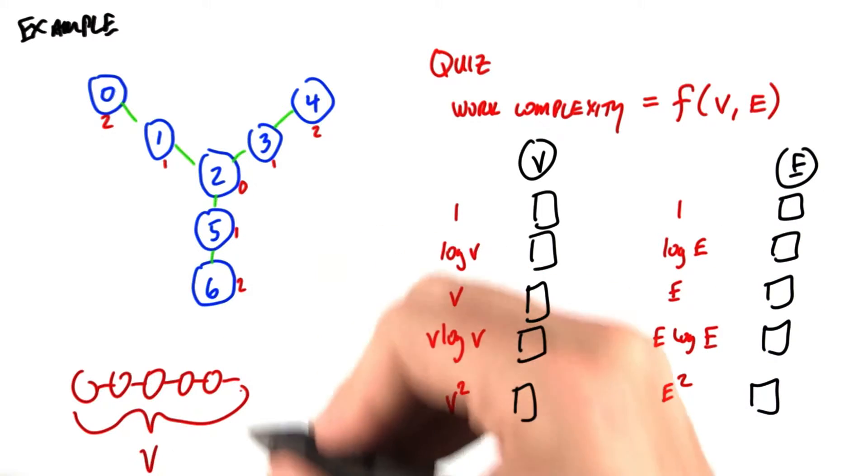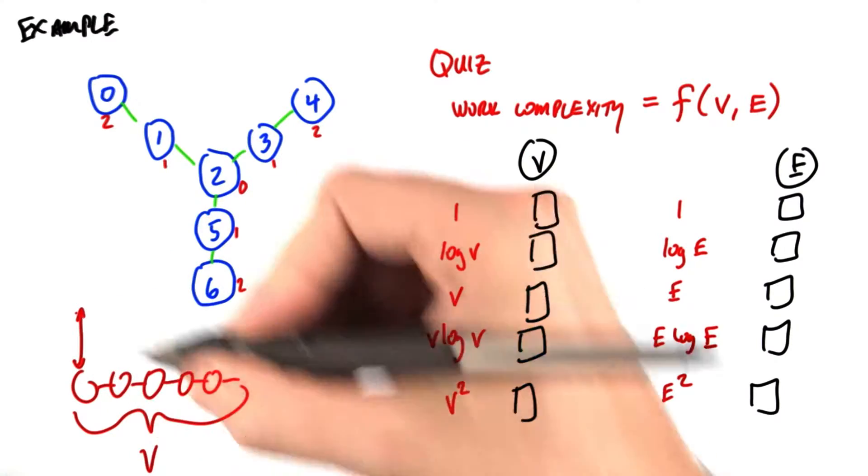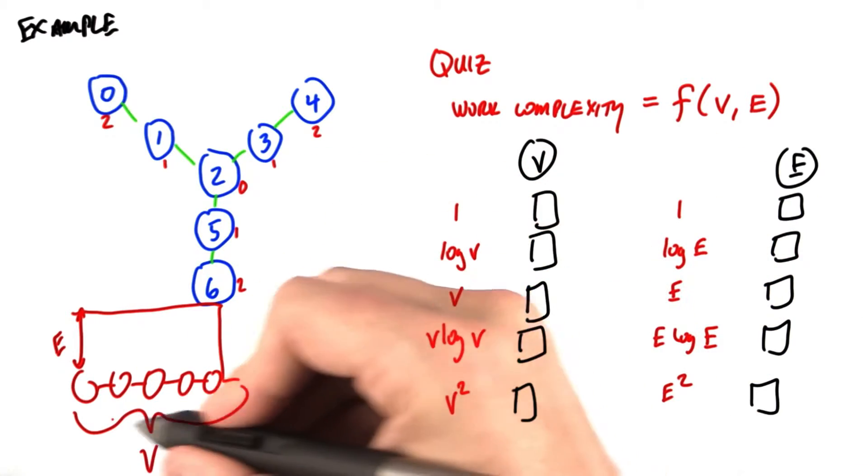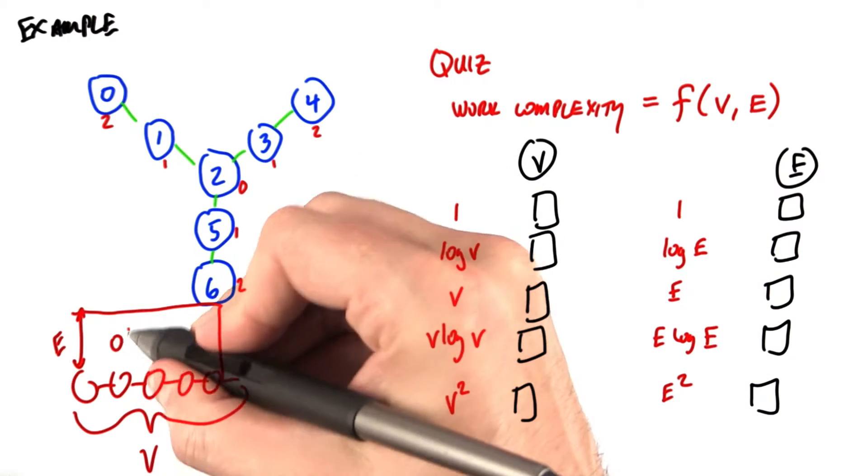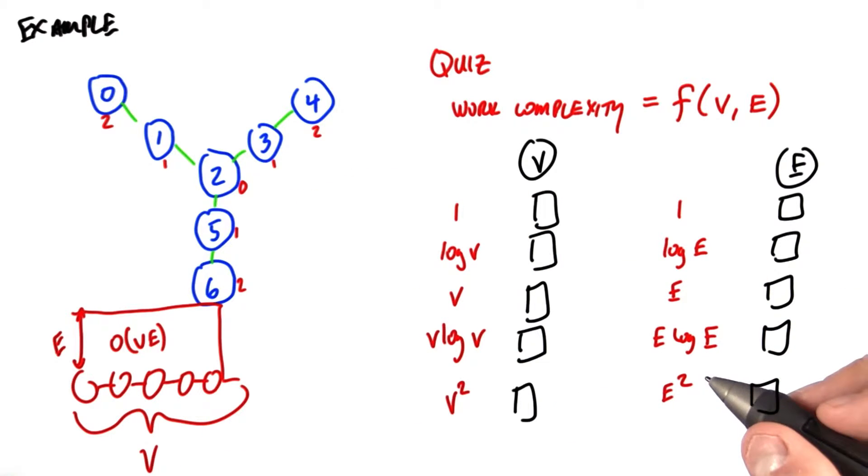And how much work are we going to do in each one of those iterations? In each iteration, we know that we will visit all e edges. So if we take the amount of work here as a product between v and e, we know that our final answer is going to be on the order of v times e.